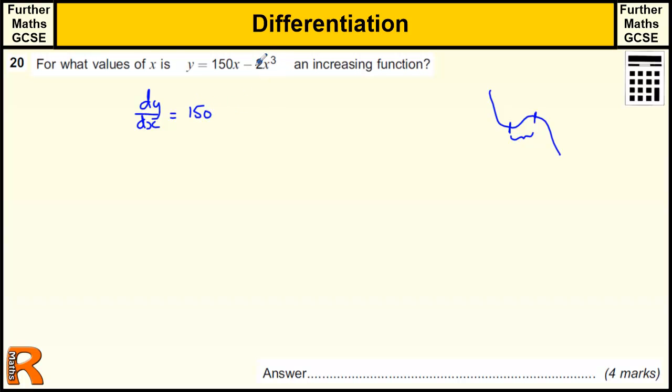And then differentiating 2x cubed, we reduce the power by 1 to make it x squared. That power comes down and multiplies by this minus 2 to make minus 6. So that's our gradient function.